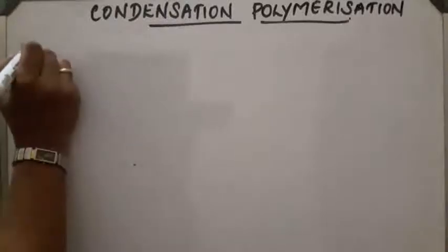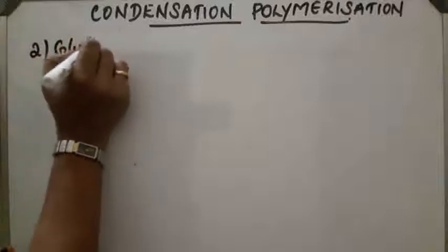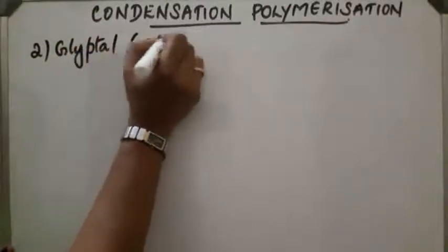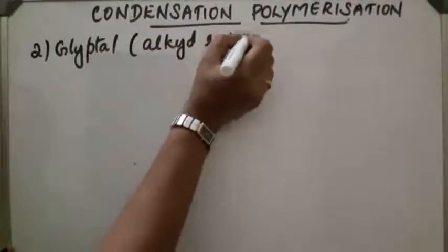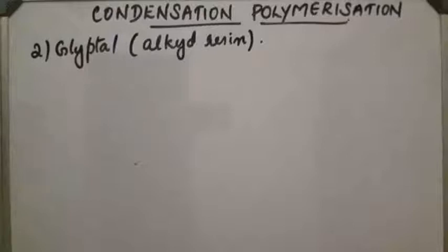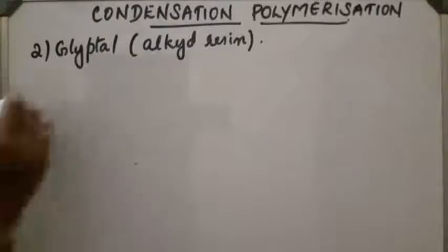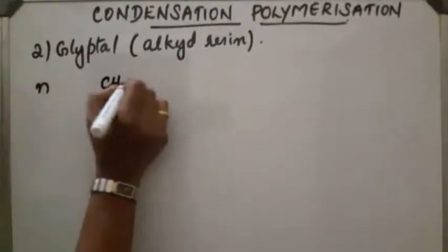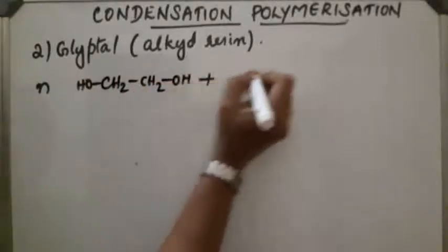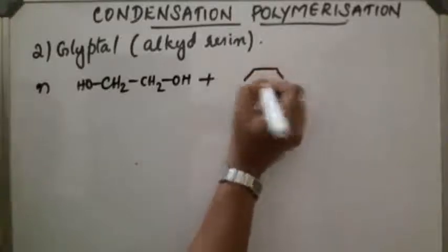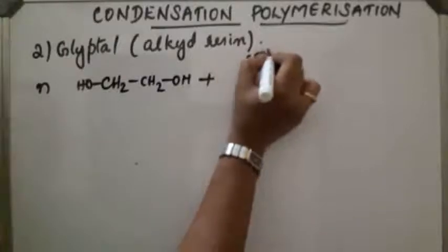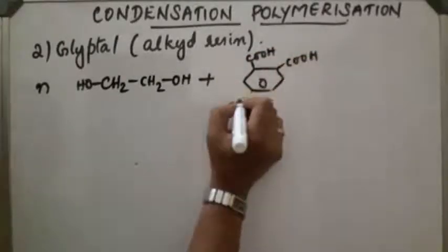The second example is glyptol, also called alkyd resin, which is a polyester. It is a thermoplastic polyester resin. It can be obtained from a diol called ethylene glycol and a dicarboxylic acid called phthalic acid. Phthalic acid has the structure with two COOH groups.